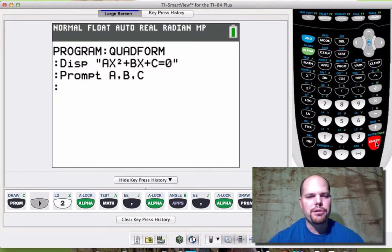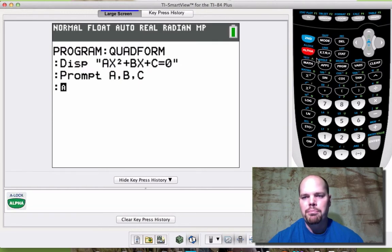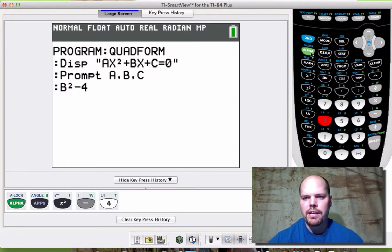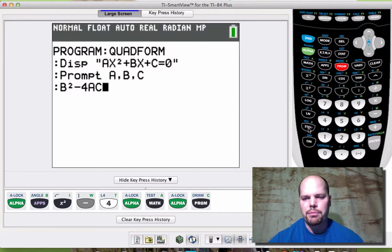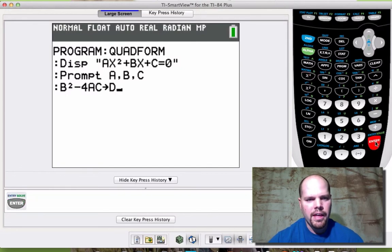Now the next thing I wanted to do is find the discriminant to determine if this is going to have two solutions, one solution or no solutions. We need the discriminant, that's B² - 4AC. So that's the next thing I'm going to calculate. B² - 4AC. And I need to store that to some variable. Let's store it into D. B² - 4AC, store that into D.